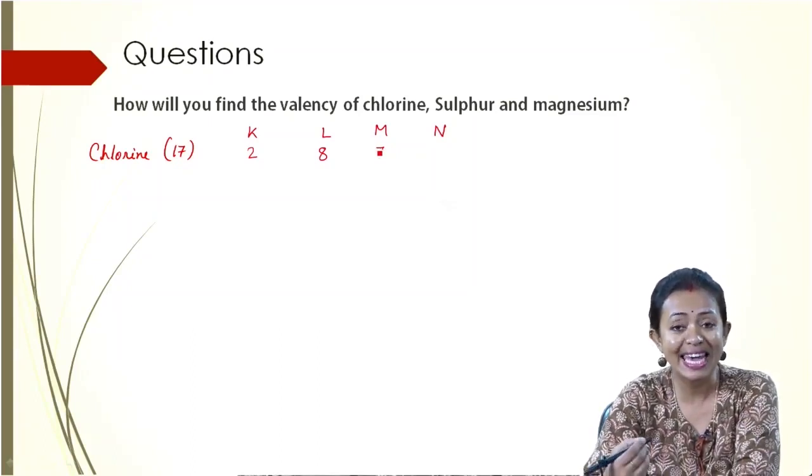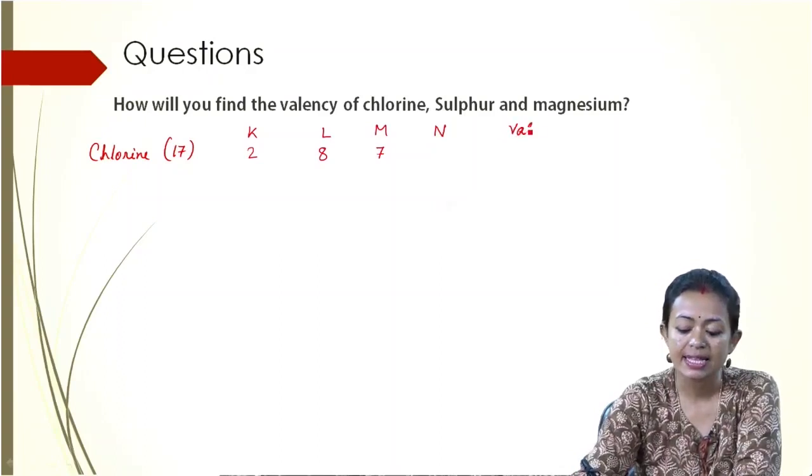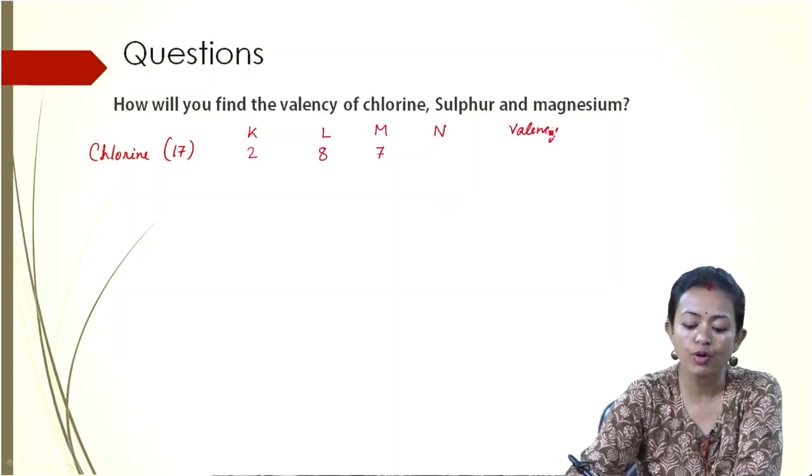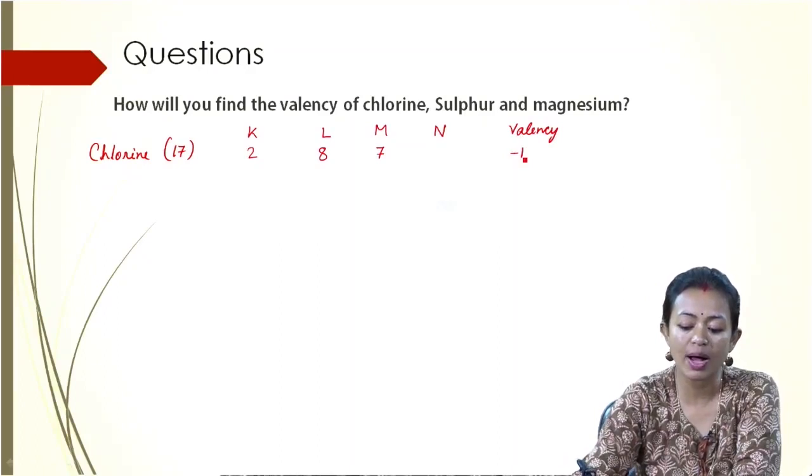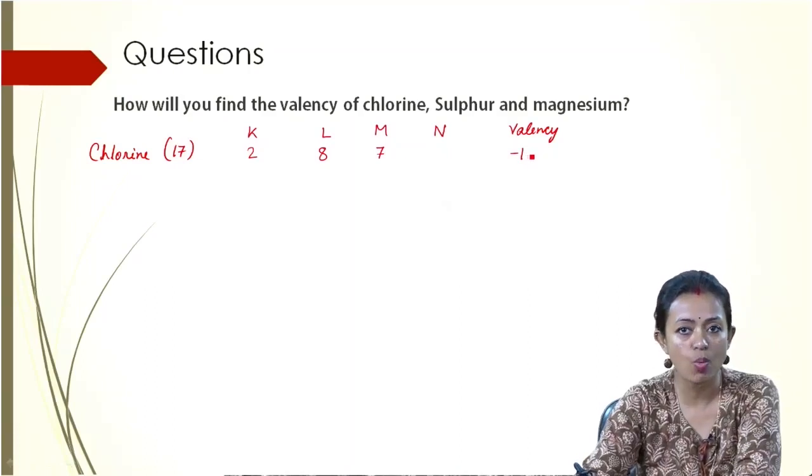So what does Chlorine do? It gains an electron from any other atom and thus the valency of Chlorine becomes minus 1 because it is gaining a negative charge. So the valency of Chlorine is minus 1.